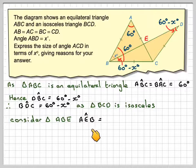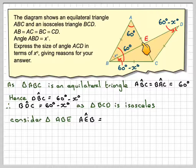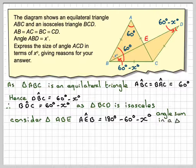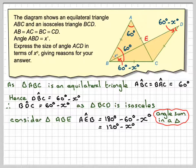So angle AEB, this angle here, will be 180 minus 60 minus X. Don't forget we're considering this triangle here. Angle sum of the triangle. That gives me 120 minus X degrees, so we'll mark that on our diagram.